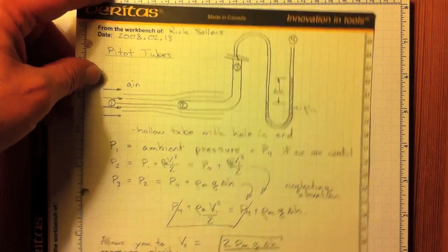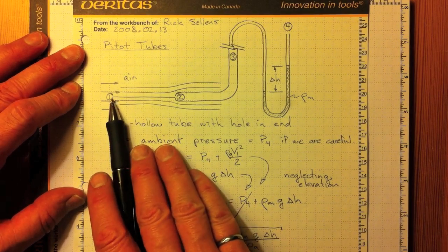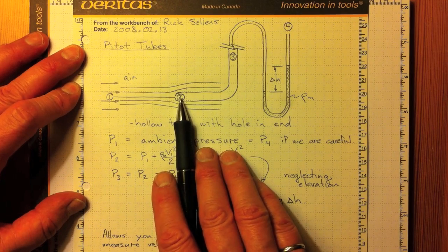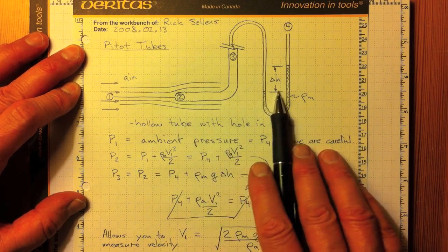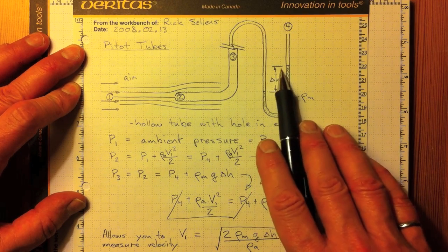We can take advantage of this effect to make measurements of flow velocity. If we know what the pressure is at location 1, we can measure the pressure at location 2, and the difference in those pressures, typically measured on a manometer or some other differential pressure device,